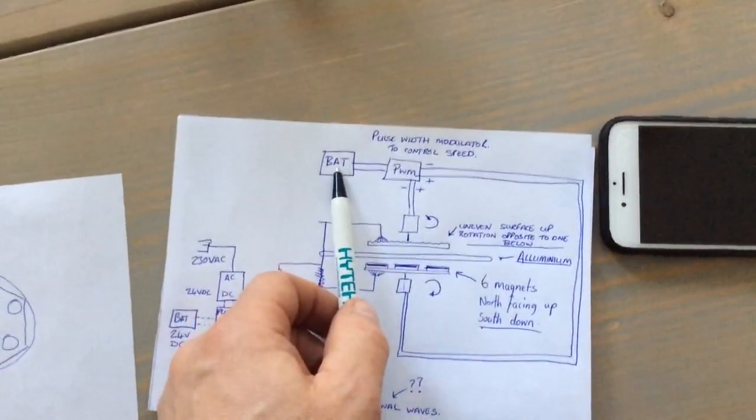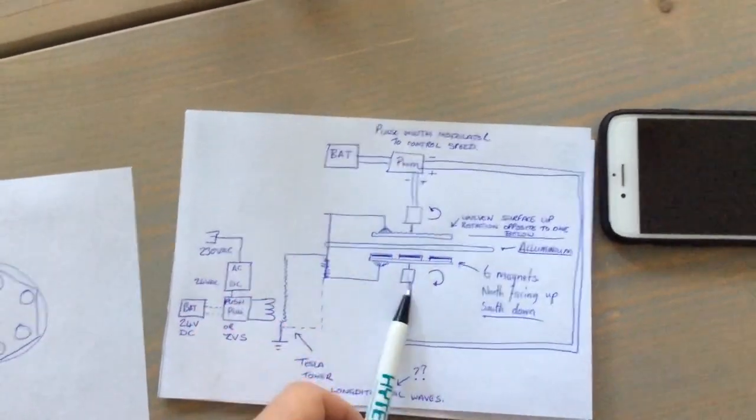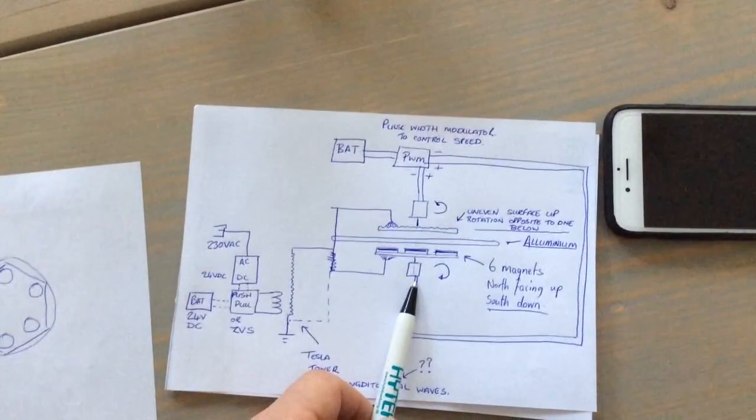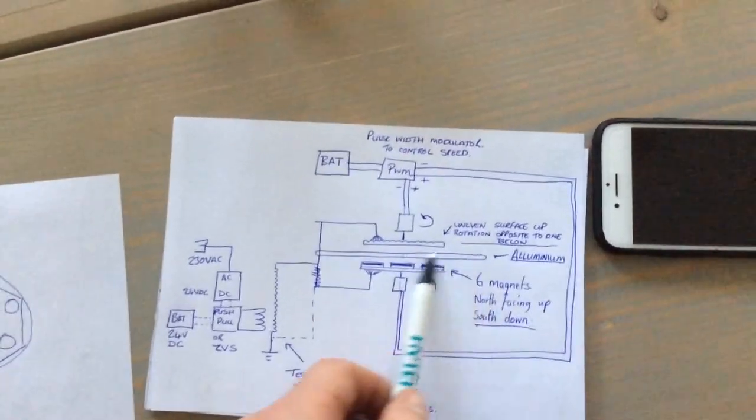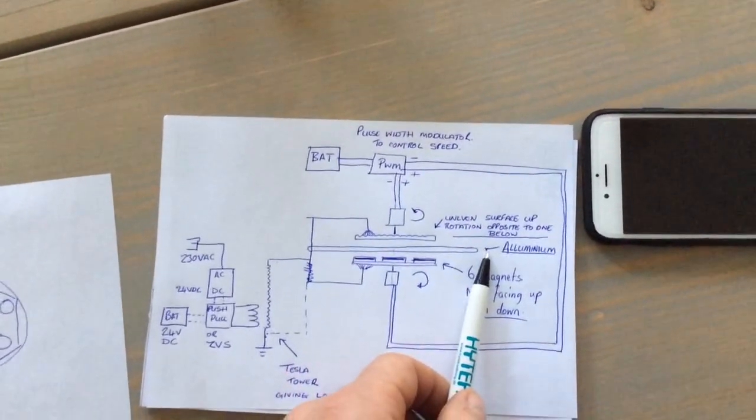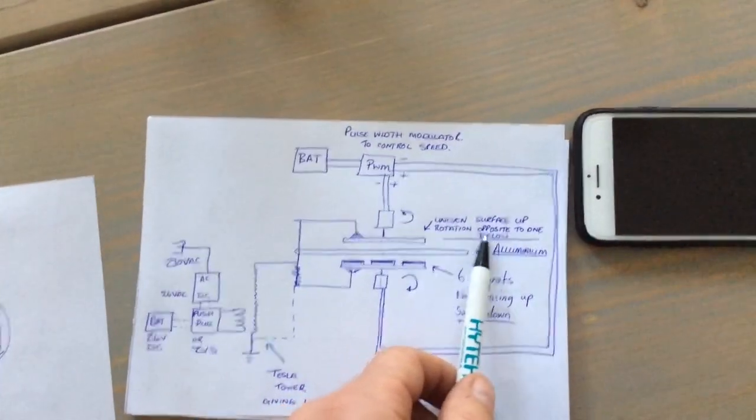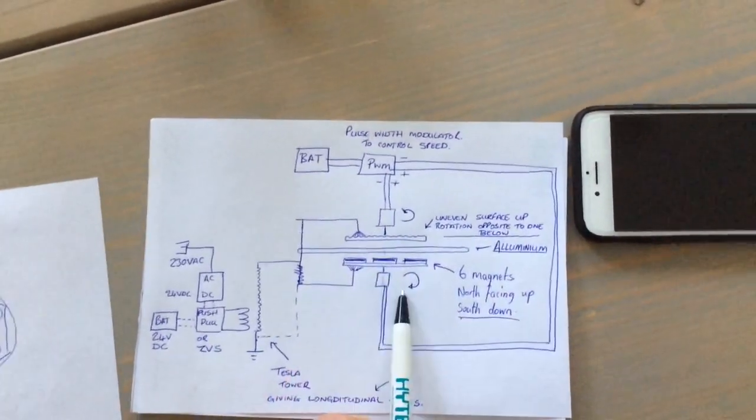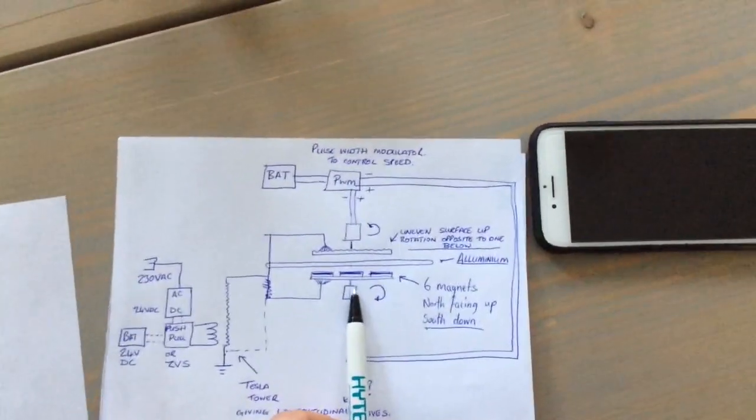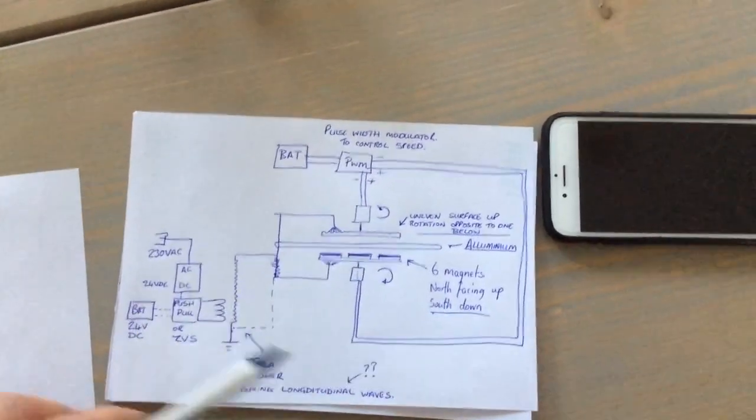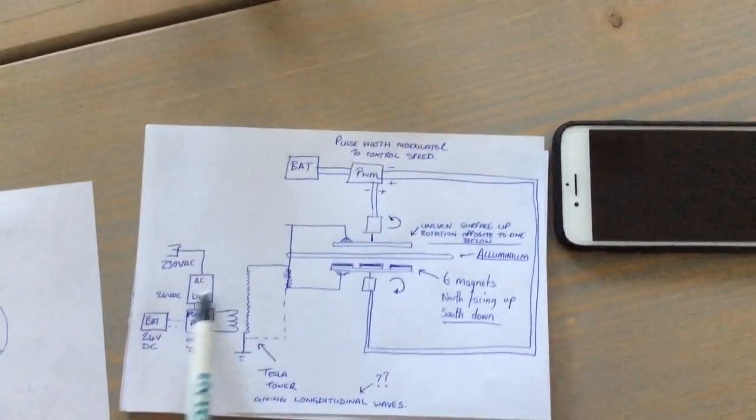Pulse width modulator with speed control will allow speed control on the two motors and aluminum plate here for the disc. And even so, surface rotation opposite. These have to rotate in opposite directions for it to work, apparently.